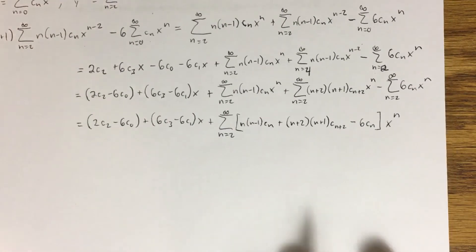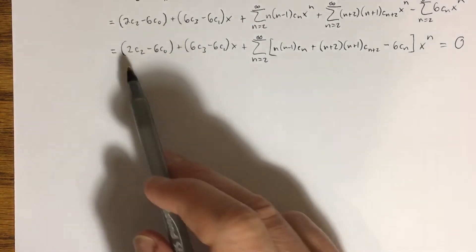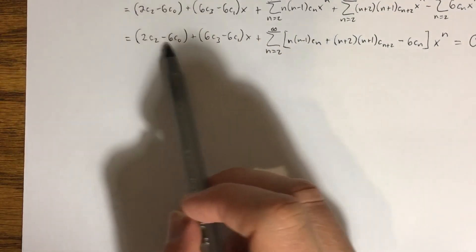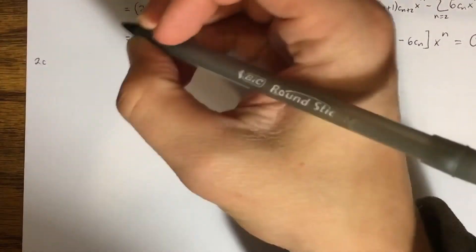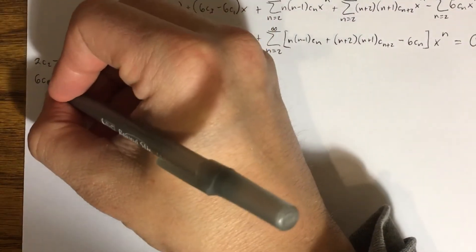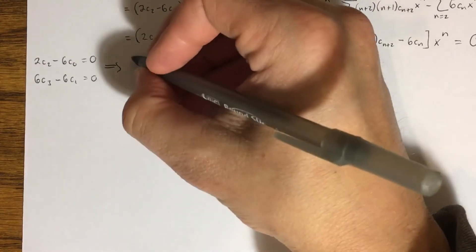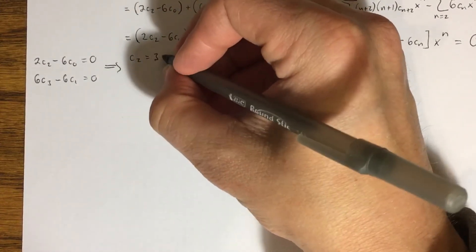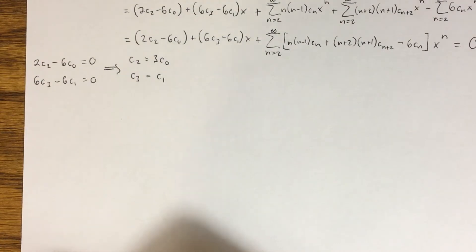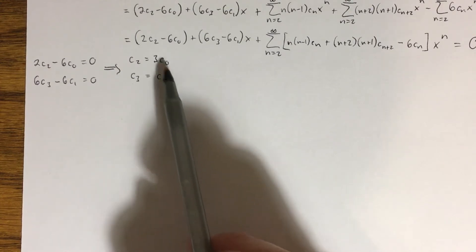This whole expression should equal zero according to our DE. By the identity property, each coefficient must equal zero. So the constant term gives 2c₂ minus 6c₀ = 0, and the x term gives 6c₃ minus 6c₁ = 0. Together, these imply c₂ = 3c₀ and c₃ = c₁. That gives us a way of expressing c₂ and c₃ in terms of the parameters c₀ and c₁.